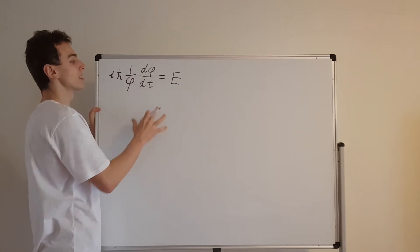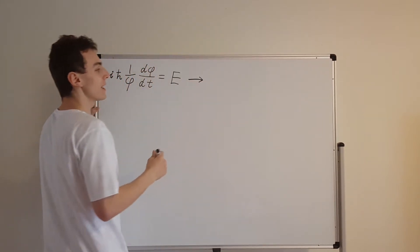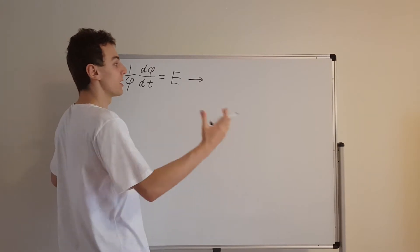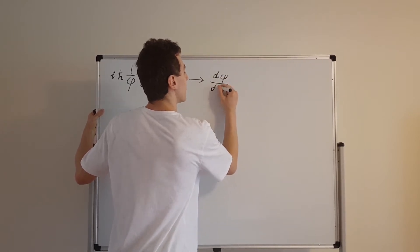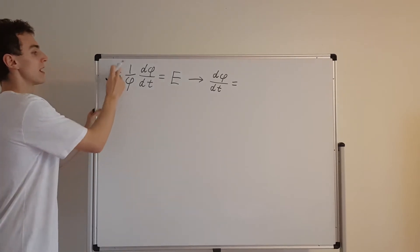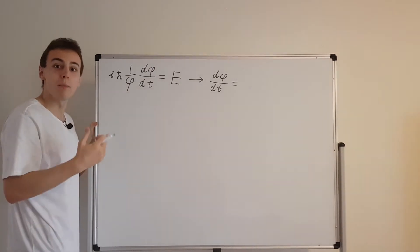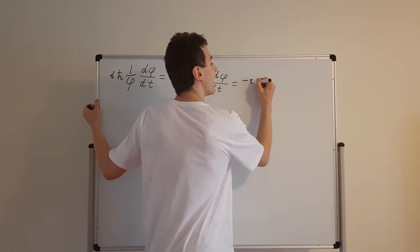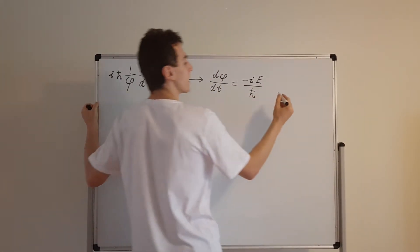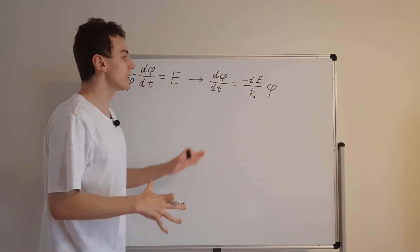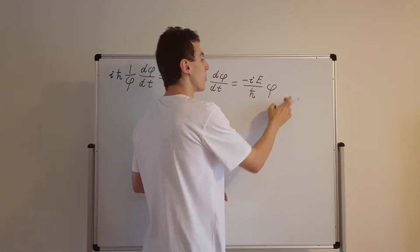We chose to call that constant E, because it turns out to be the energy of the particle. Let's see how we can solve this equation. We can rearrange it to make it more readable. If we write the time derivative on the left-hand side, dφ/dt equals — moving iħ to the other side, dividing by i is the same as multiplying by minus i — so we get minus i·E/ħ times φ.